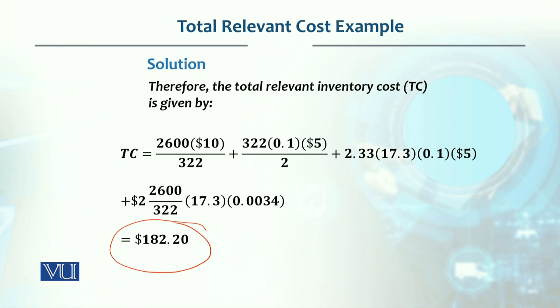We've determined what our ordering cost is, what our annual holding cost is, what the reorder point is, and how much safety stock to keep. When we determine the total cost of all of that, we get $182.20 per year for this inventory policy.